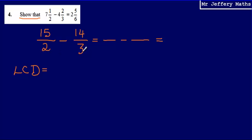So it's the lowest number which is in both the 2 times table and in the 3 times table as well. So 2, 4, 6 and obviously 3, 6. So my lowest common denominator is going to be 6. So I'm going to put that on the bottom of my fractions.